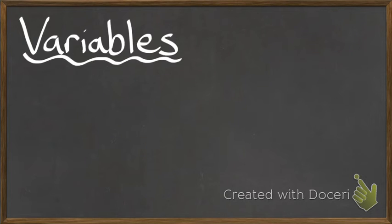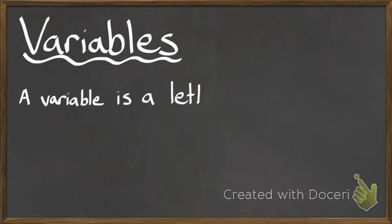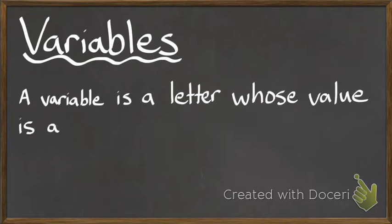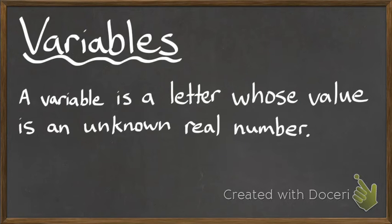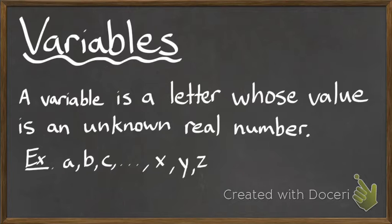Before we can start, we need to know what variables are. Variables are the letters whose values are given to unknown real numbers. A lot of times when you see variables, they use just your regular letters in the alphabet, so like ABC or XYZ.